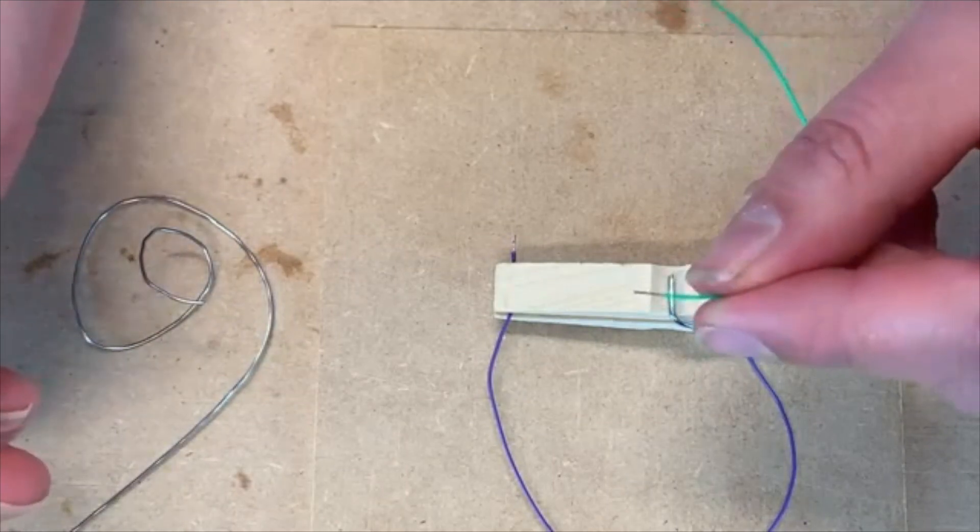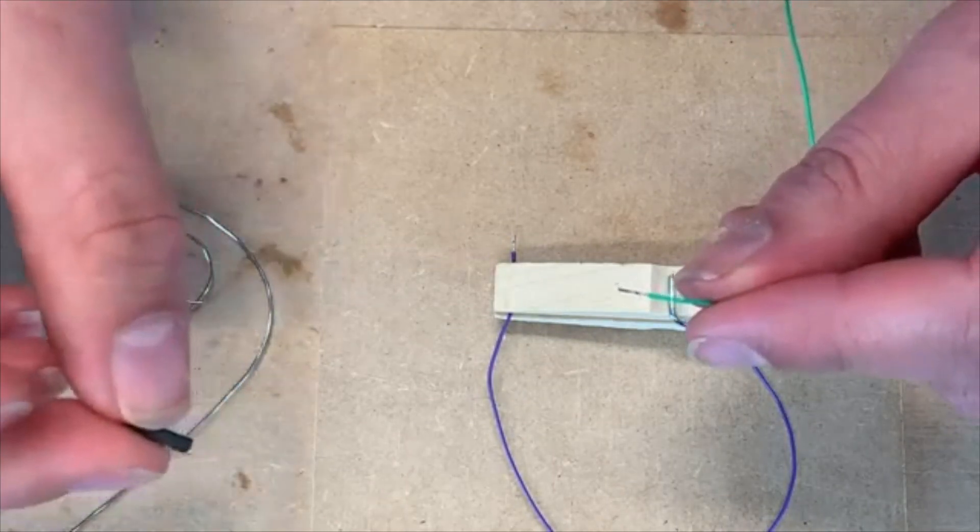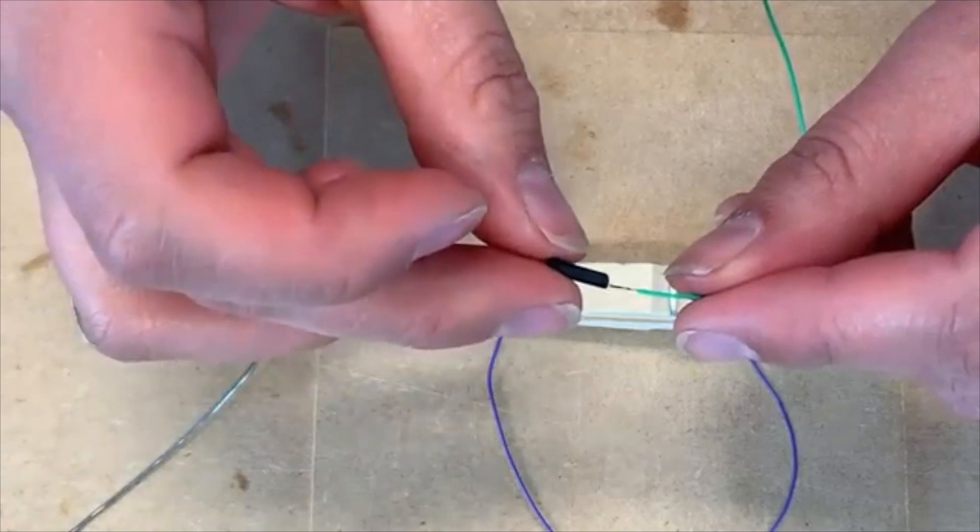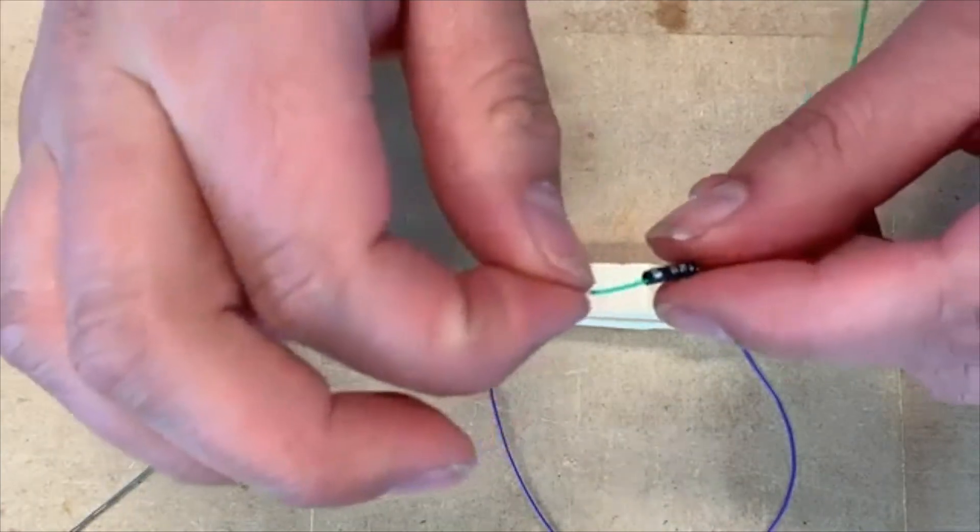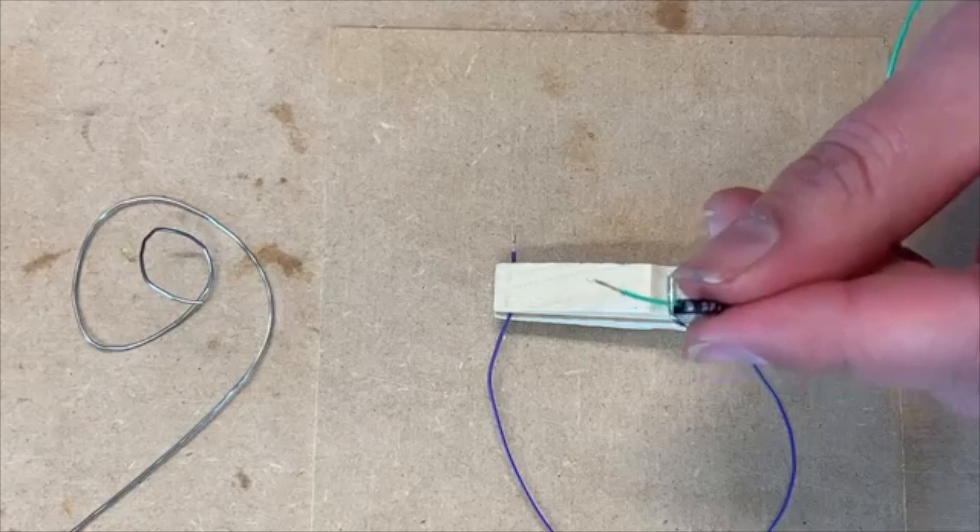We can also solder two wires together. If we're going to do that, we're probably going to want to put heat shrink over the joint, so I'm going to slide a piece of heat shrink over one of the wires before we solder them together.